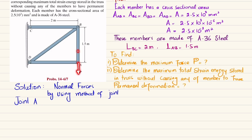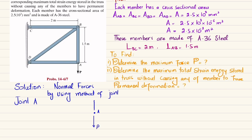Due to load P, member AB will be in tension, so it will exert a force F_AB upward on joint A. Member AD will also be in tension, exerting force F_AD horizontally at joint A. Drawing the free body diagram: point A has load P acting downward, force F_AB acting upward, and force F_AD acting horizontally. The first equation of equilibrium is the sum of forces in the x-direction equals zero, with forces to the right taken as positive. The only horizontal force is F_AD in the negative direction, so F_AD = 0.